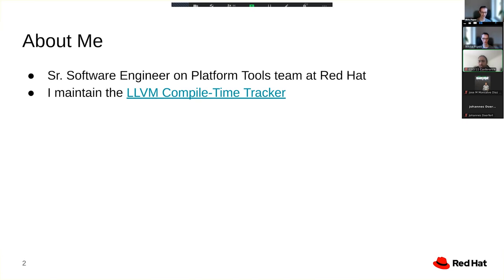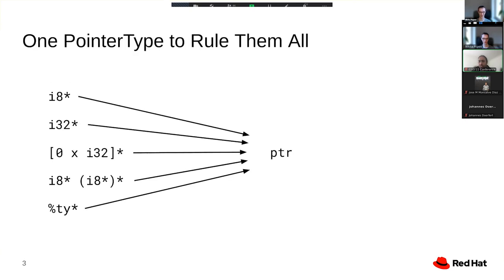With that out of the way, I can jump right into the topic and explain what opaque pointers are about. The core idea is that instead of having different pointer types, like a pointer to i8, pointer to i32, pointer to array, pointer to function, pointer to struct, we only have one single opaque pointer type, which we spell simply as PTR, which does not specify what it supposedly points to.